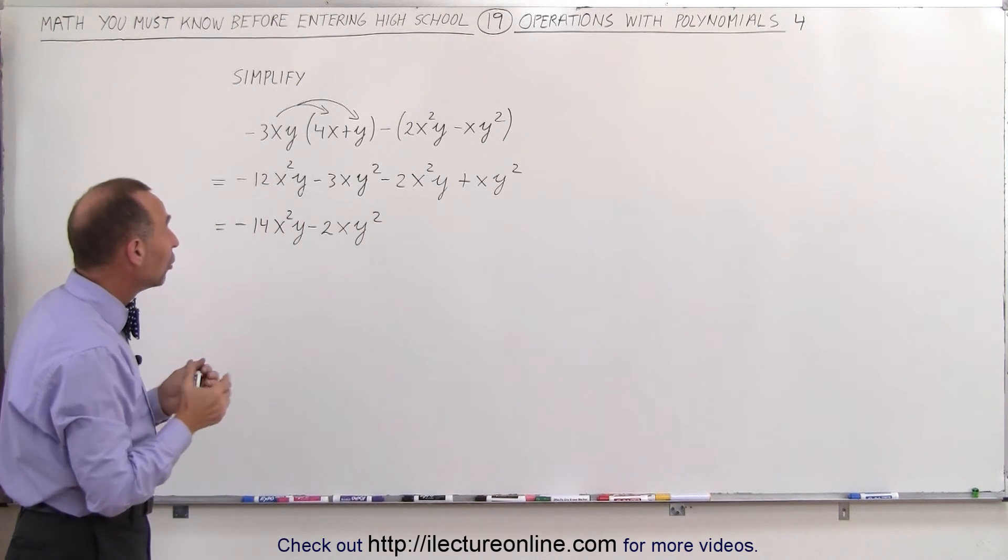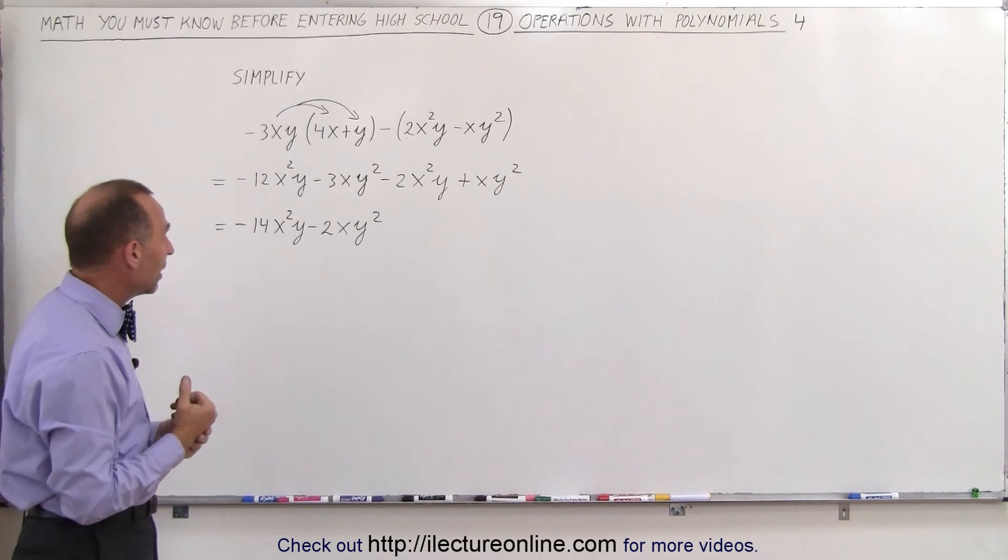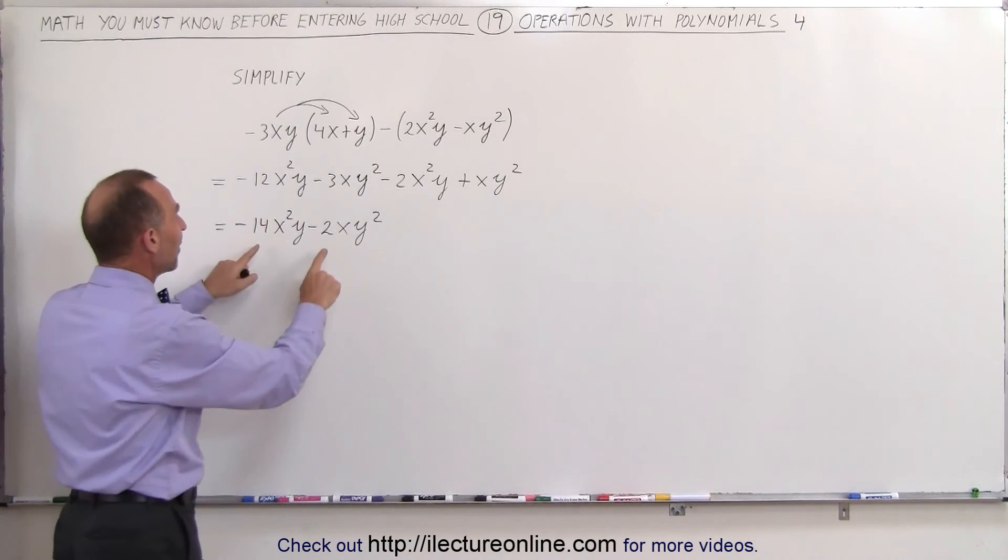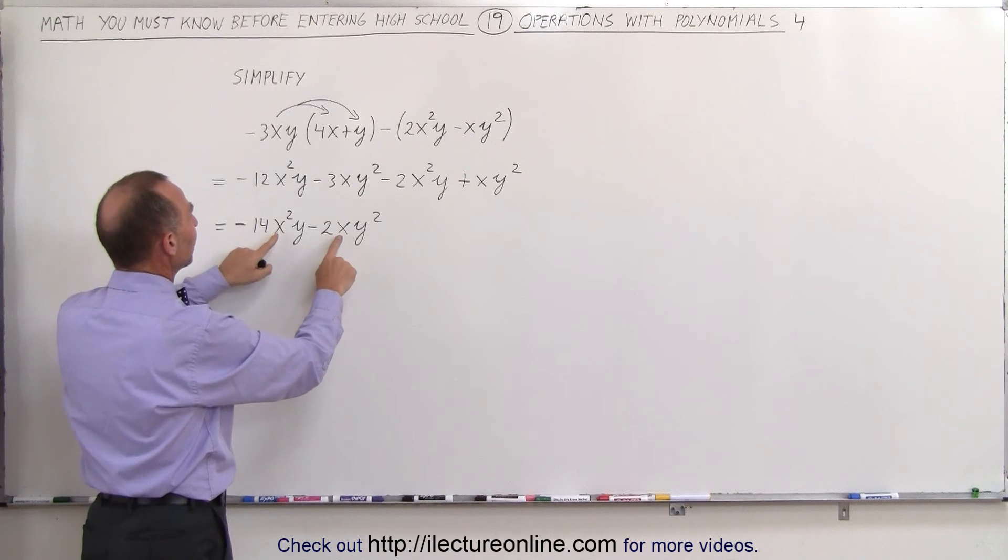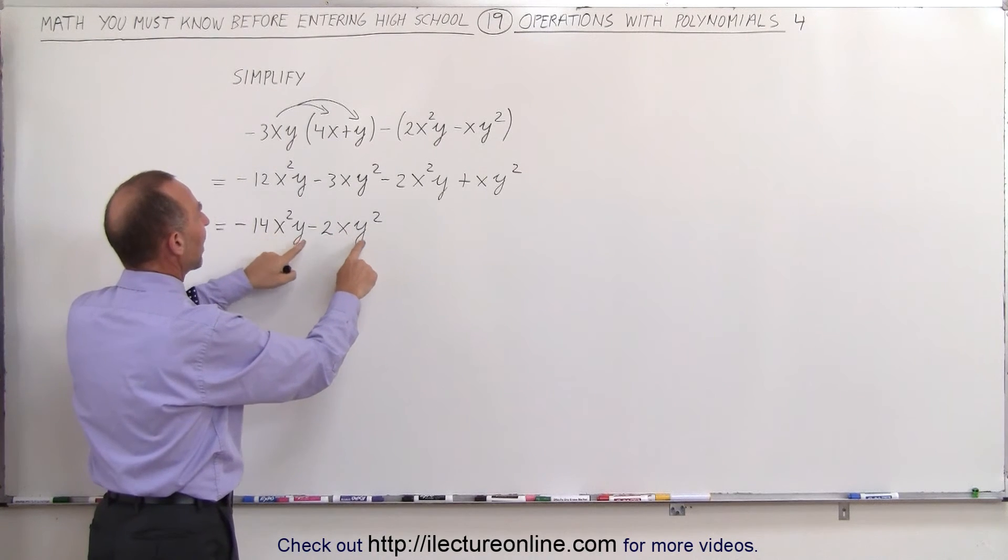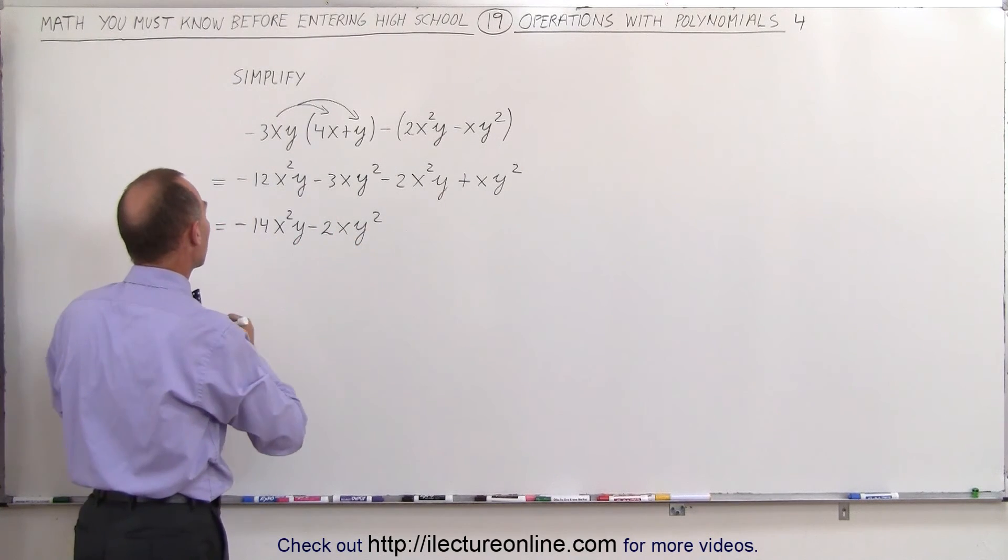Now it's customary to factor out anything that's common. Notice we can factor out a negative 2. We can factor out a single x. And we can factor out a single y. So this can now be written as follows.